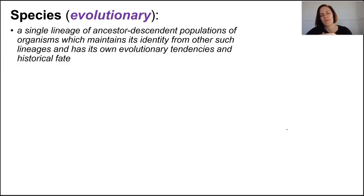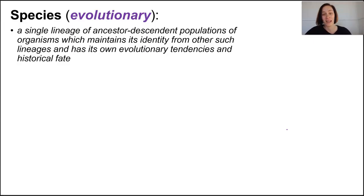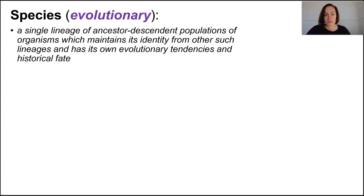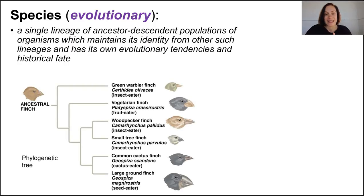This evolutionary concept is more inclusive to asexual organisms and, interestingly, to extinct species, where the biological species concept couldn't really apply — because if a population has died out, they obviously can't produce viable offspring, but that doesn't preclude them from being a separate taxonomic group. Through this lens, a species is genetically unique, meaning genes aren't flowing back and forth between different species. Each species began as a population that accumulated genetic changes over time, split from its ancestral lineage, and became an isolated species.